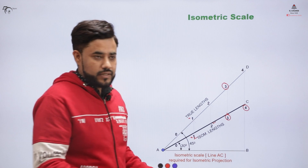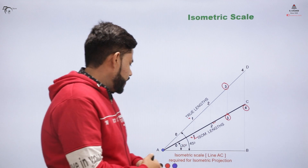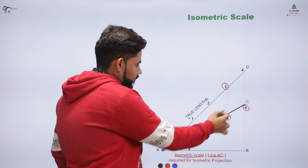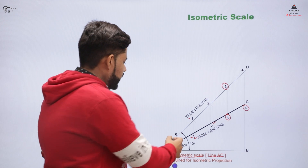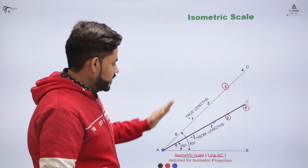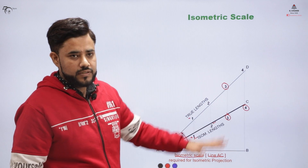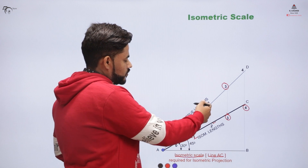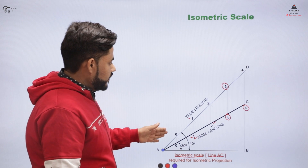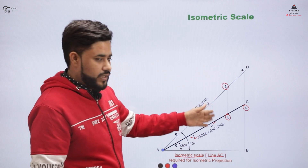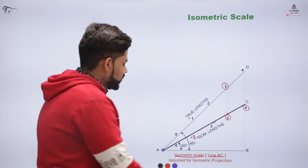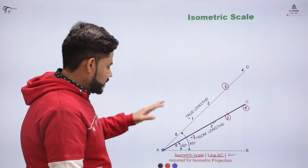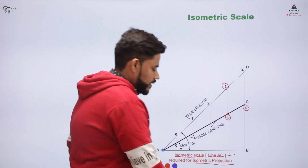What we get from this particular situation is the isometric scale, and the line AC represents that isometric scale. Earlier, this length was 50, and we had the division so that measurement is possible based on the true length. But we want to convert that true length into the isometric length. For that, we divided it into sections and drew perpendiculars over the surfaces so that the scale can be formed. This line AC indicates the isometric scale and is specifically required for isometric projections.